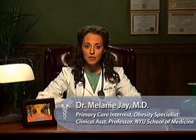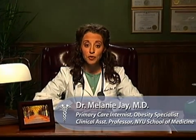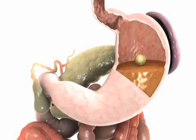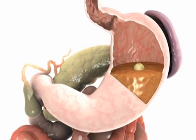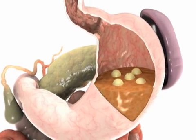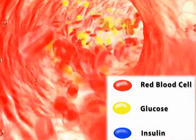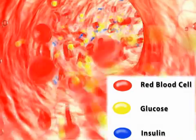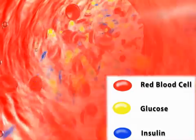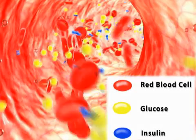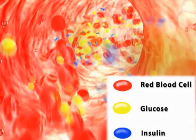Diabetes is a relatively common metabolic disorder that affects the way the body uses food for energy and growth. The food we consume is converted into glucose, or simple sugar, which enters the bloodstream as a source of fuel. Insulin, a hormone produced by the pancreas, helps regulate the level of glucose in the blood and how glucose is used.